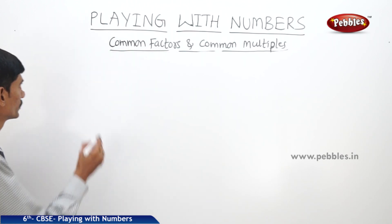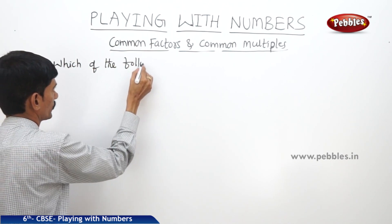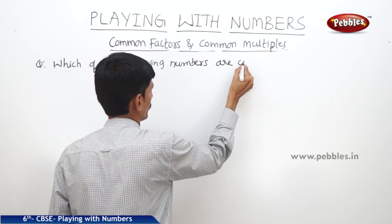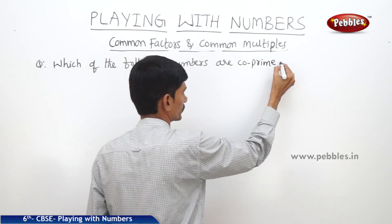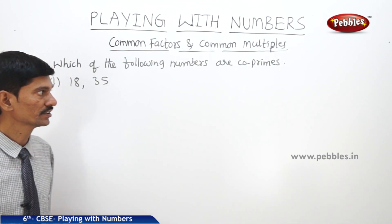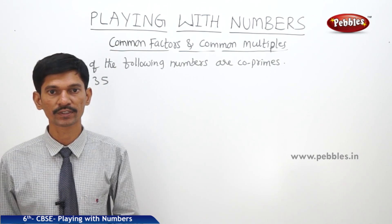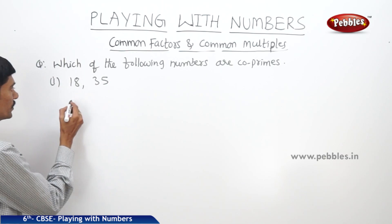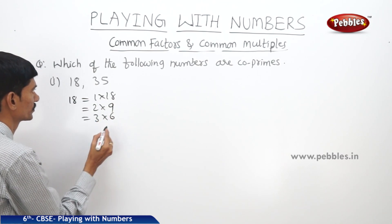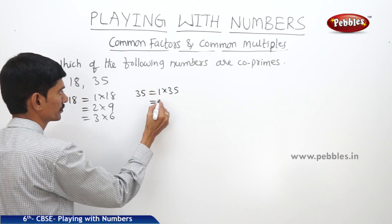Now let us see the next question: which of the following numbers are co-primes? The first one is 18 and 35. If two numbers have only one as the common factor, then they are said to be co-prime numbers. The factors of 18: 1 into 18, 2 into 9, 3 into 6. The factors of 35: 1 into 35, 5 into 7.